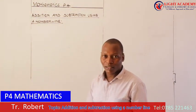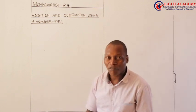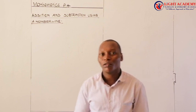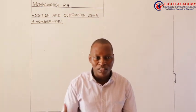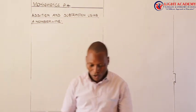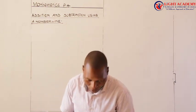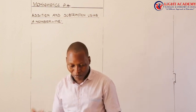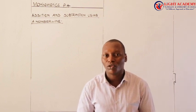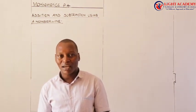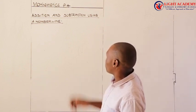This idea was introduced in your earlier classes of P2. But before we go to the number line, we need to review what we talked about. When we talk about addition, we mean to get the sum, or to put things together and get their total. When we talk about subtraction, we use words like minus, take away, and getting the difference — those words have the same meaning as subtraction.